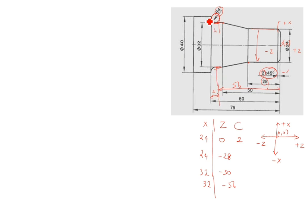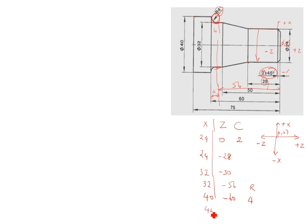Up to here is 40, so we finish up to here. After that, this is 60 and here is 40, so plus 40. The Z value at 60 is minus 60. The radius given is 4. Up to here is finished. Here also X is 40, and the X Z value is 75, so you write 40 and minus 75.